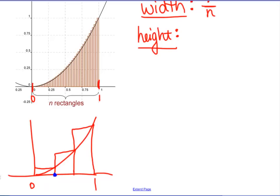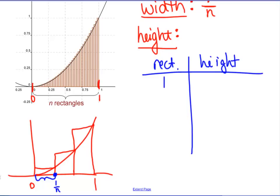How far over do I have to get from 0 to get to this number? 1 over n, right? The width. So the height, let's make a chart. For the first rectangle, the height is going to be f of 1 over n. It's going to be 1 over n squared.